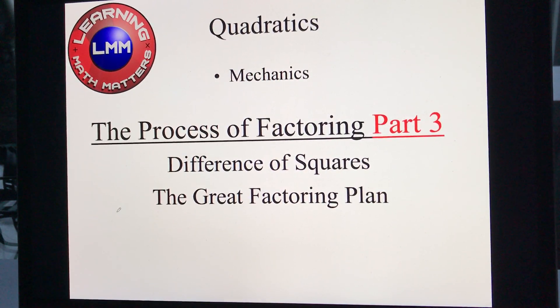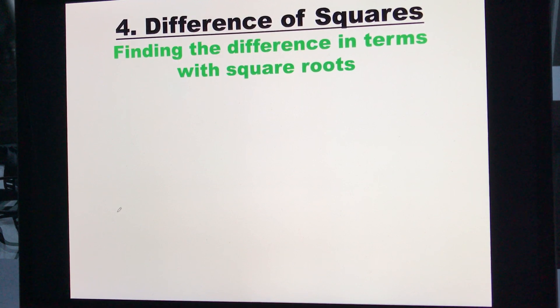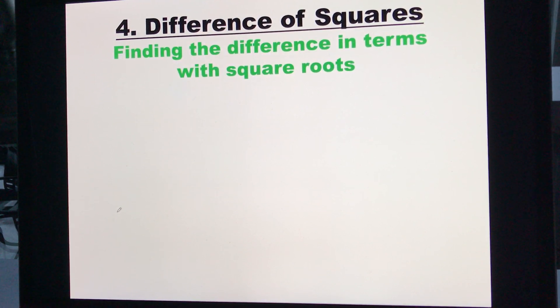Factoring Part 3. The last kind of factoring we'll look at is called the difference of squares. It's actually very straightforward.